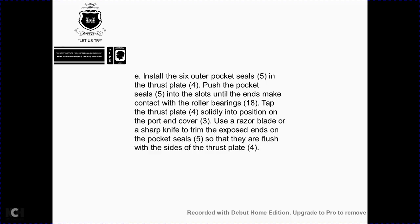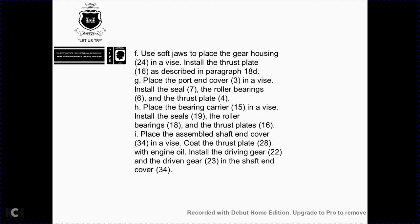Seal the outer pocket seal 5 and thrust plate 4; ensure pocket seal 5 slot ends make contact with roller bearing 18. Thrust plate 4 should be solidly positioned against the port end cover 3. Use a razor blade or sharp knife to trim the exposed ends of pocket seal 5 so that they are flush with the side of thrust plate 4. Use soft jaws with the plate for gear housing 24. Install thrust plate 16 as described in paragraph 18D. Install seal 7, roller bearing 6, thrust plate 4, and plate for bearing cap 15 in the vise.